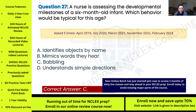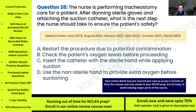Question twenty-eight: The nurse is performing tracheostomy care for a patient. After donning sterile gloves and attaching the suction catheter, what is the next step the nurse should take to ensure the patient's safety? This has been asked six times. Options: A) restart the procedure due to potential contamination; B) check the patient's oxygen levels before proceeding; C) insert the catheter with a sterile hand while applying suction; D) use the non-sterile hand to provide extra oxygen before suctioning.